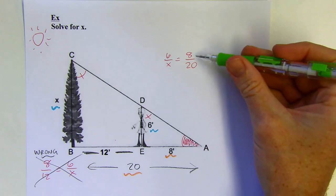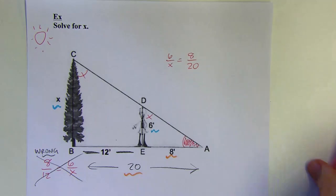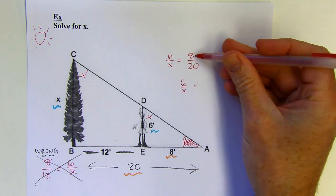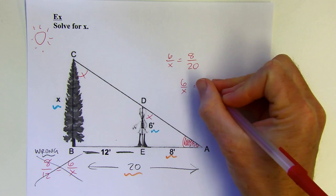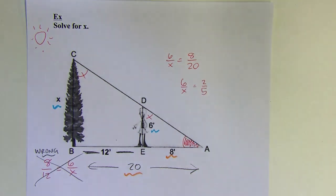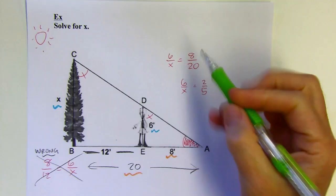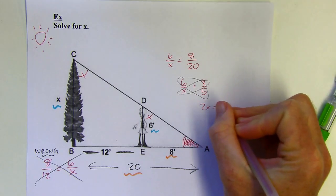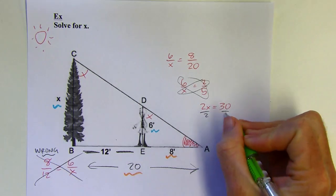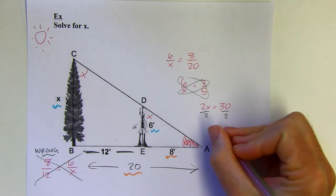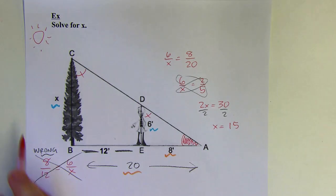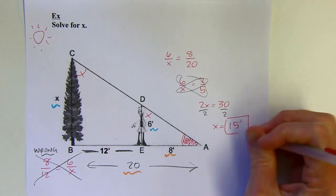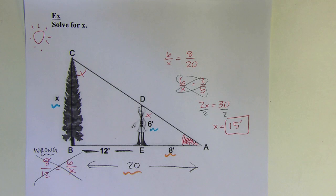Then I can cross multiply. You could actually reduce the front. Sometimes I like to do that. I'm going to go ahead and reduce 8/20 first. This would reduce to 2/5, and then cross multiply. Now I've got smaller numbers to deal with. So 2x is going to equal 30, and then divide by 2 and x should equal 15. The units are going to be feet, so that tree would be 15 feet tall. And that's it for 8.2.